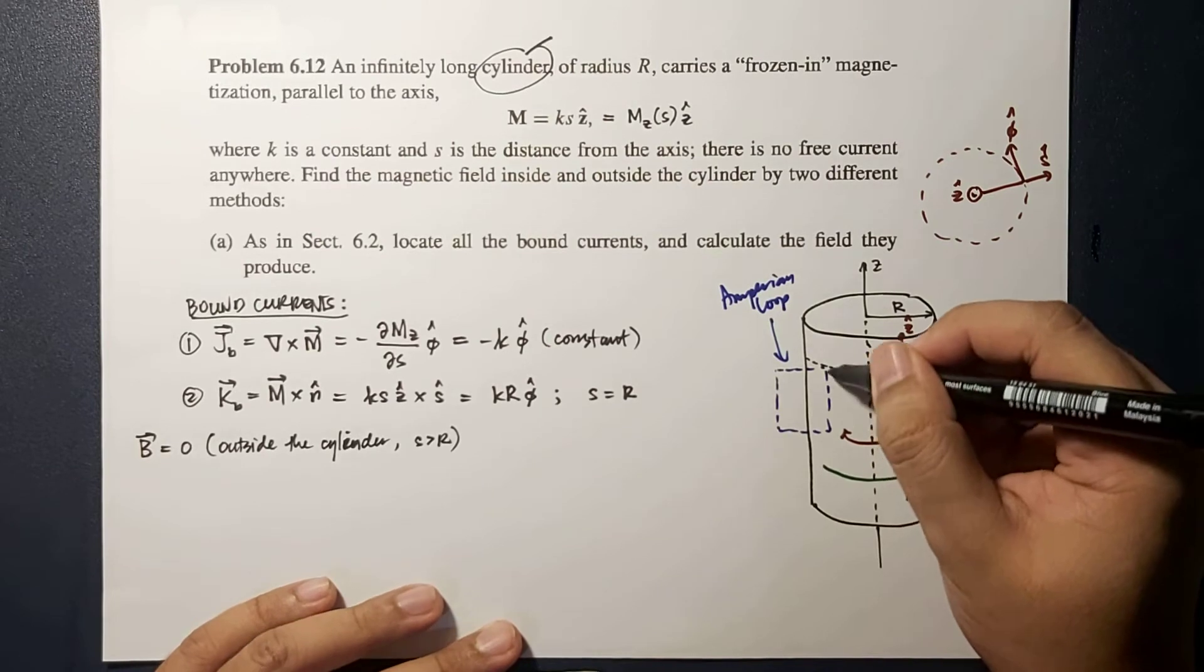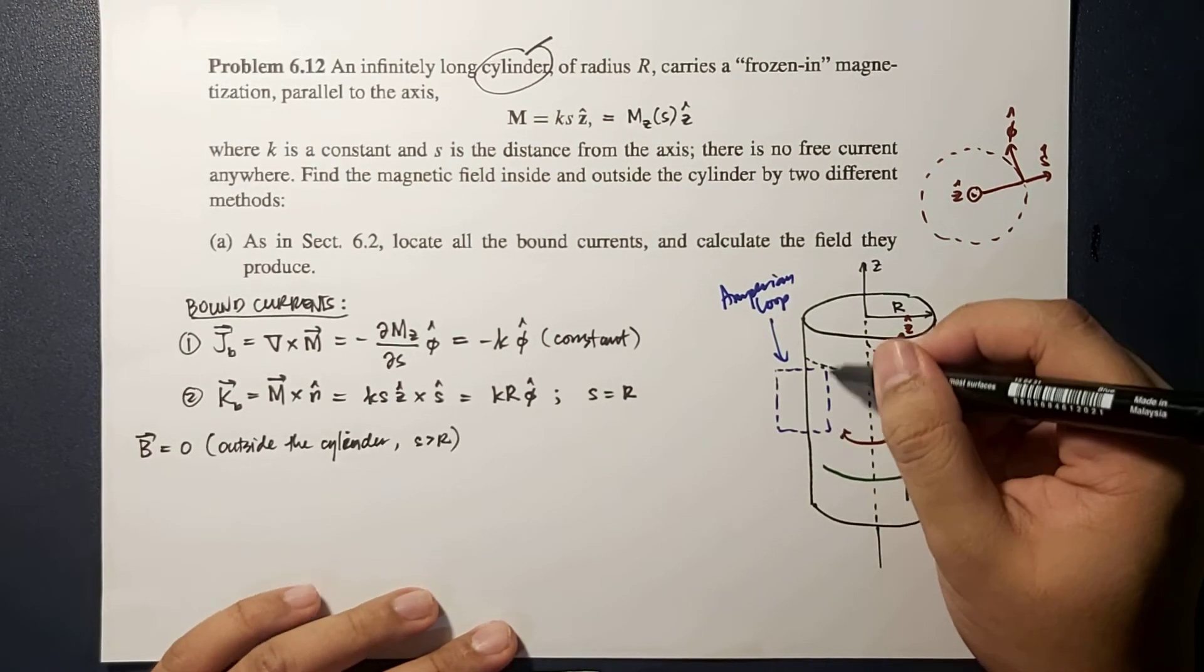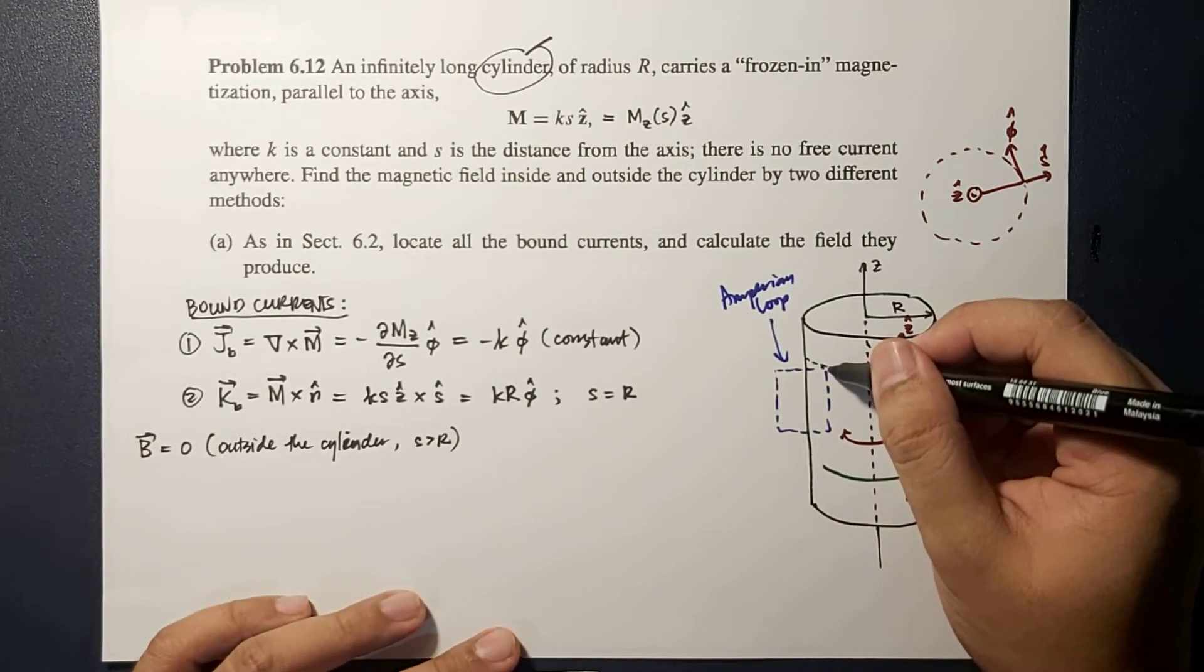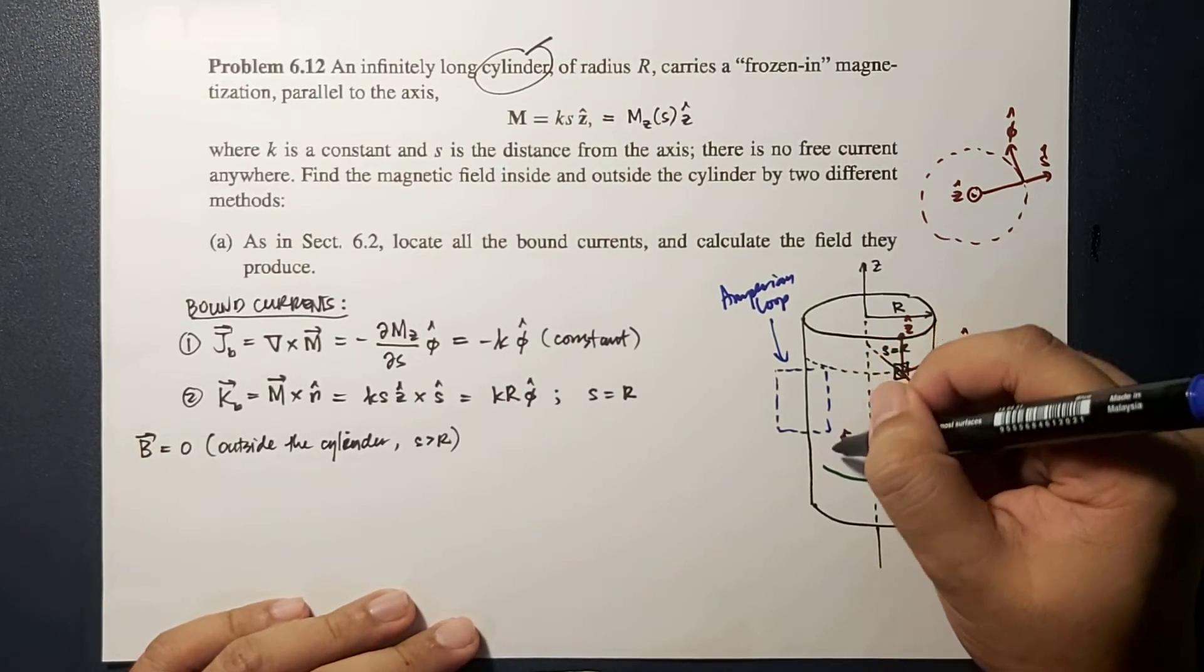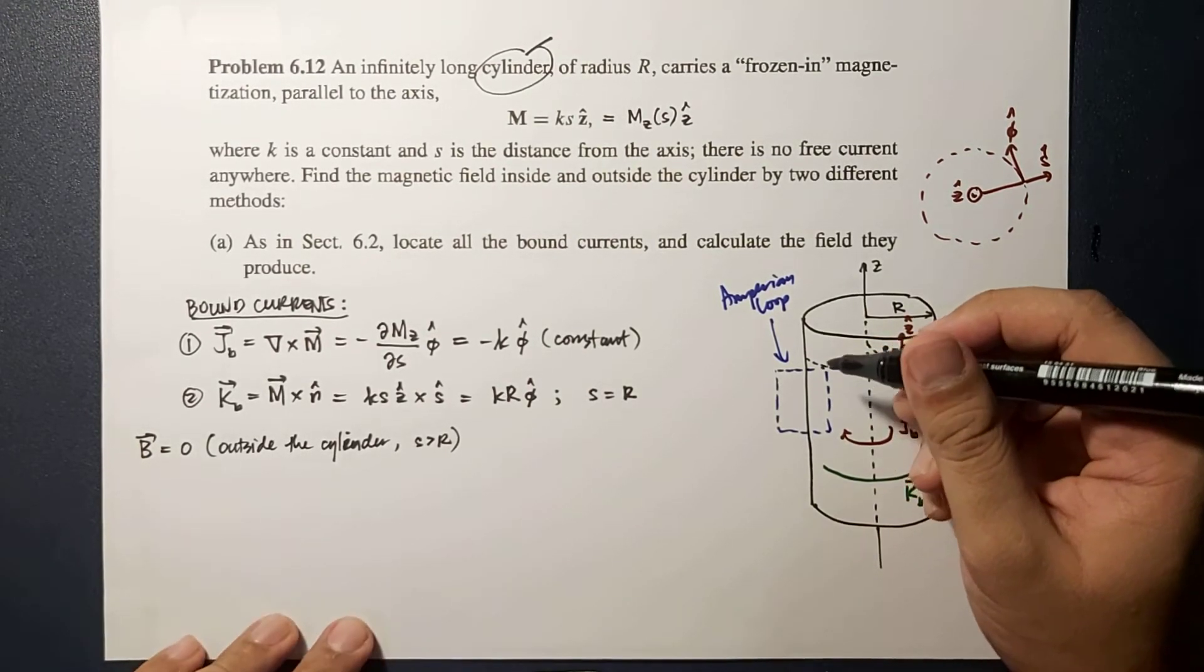Wherein this side of this loop will contribute to the magnetic flux, the dot product of the magnetic field with your line element.